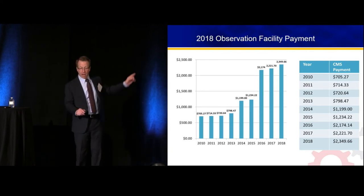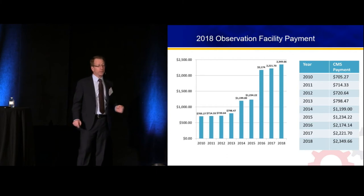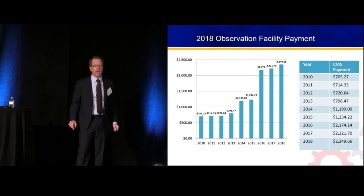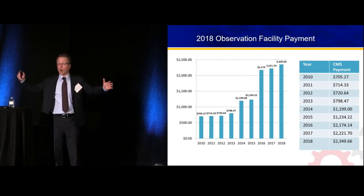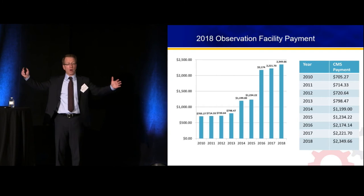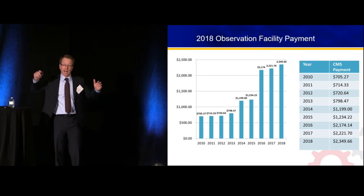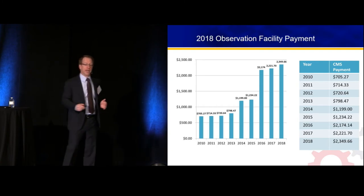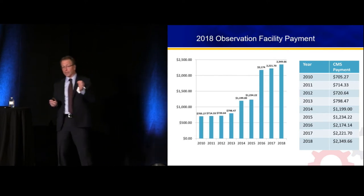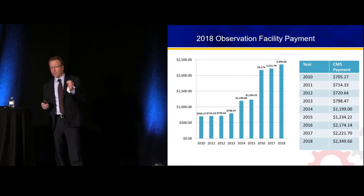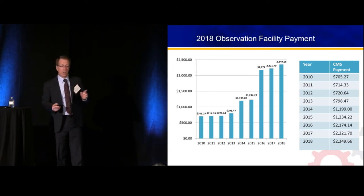How did they come up with the $2,200 currently paid? They took the sum of costs for all the individual charges, subtracted 7–8%, and said here you go, do a good job. It's the cudgel that the federal government uses to control costs.